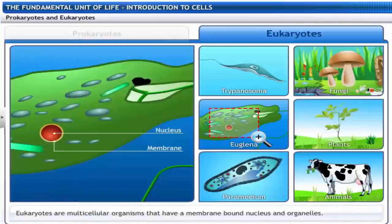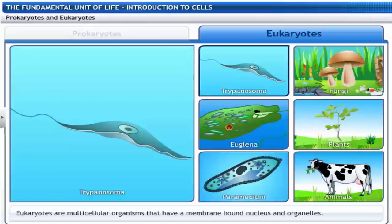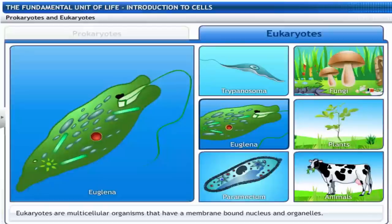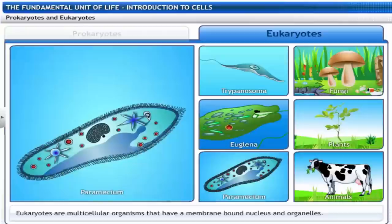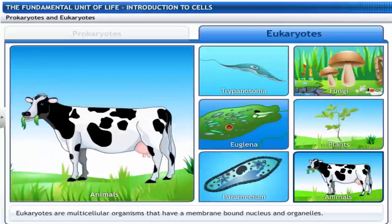Eukaryotes are characterized by membrane-bound nucleus and organelles. Eukaryotes can be unicellular such as trypanosoma, euglena, paramecium or multicellular such as fungi, plants and animals.